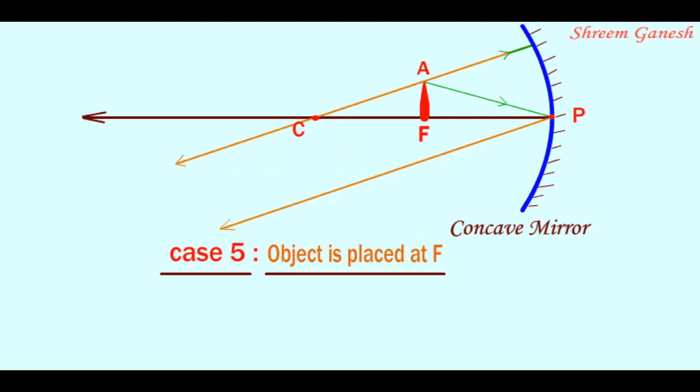These two reflected rays are parallel to each other. Since reflected rays are parallel to each other, the image is formed at infinity.